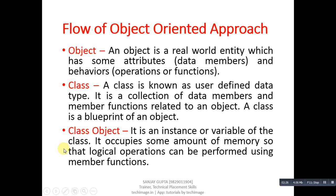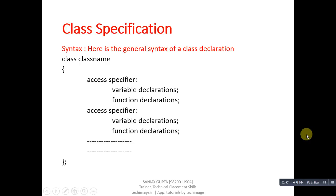A class object occupies some amount of memory so that logical operations can be performed using member functions. In simple terms, it is a variable or instance of the class, which can be created after the class is implemented inside the main function. Next is class specification — the syntax of the class, which describes how we implement member functions and data members inside the class. The syntax contains the keyword 'class', then the name of the class, then curly braces.